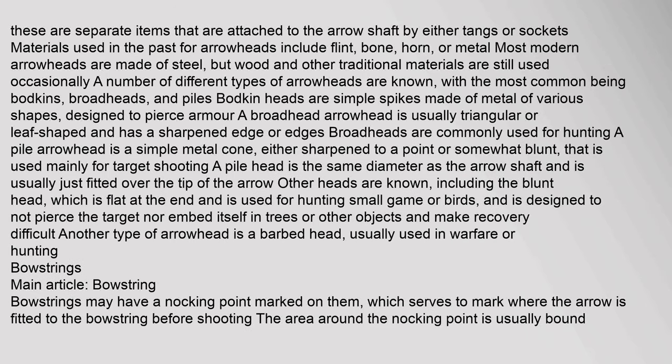Arrowheads are separate items attached to the arrow shaft by either tangs or sockets. Materials used in the past include flint, bone, horn, or metal. Most modern arrowheads are made of steel, but wood and other traditional materials are still used. Common types of arrowheads include bodkins, broadheads, and piles. Bodkin heads are simple spikes made of metal of various shapes, designed to pierce armor.